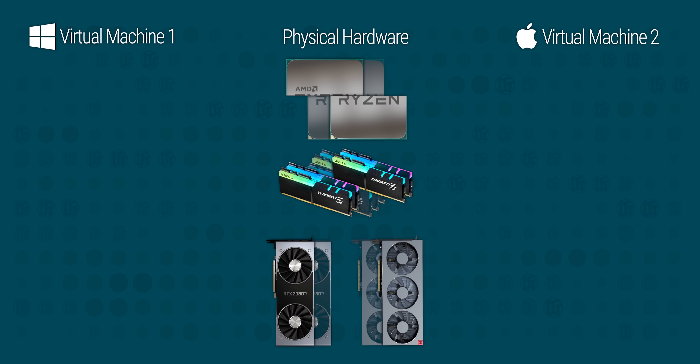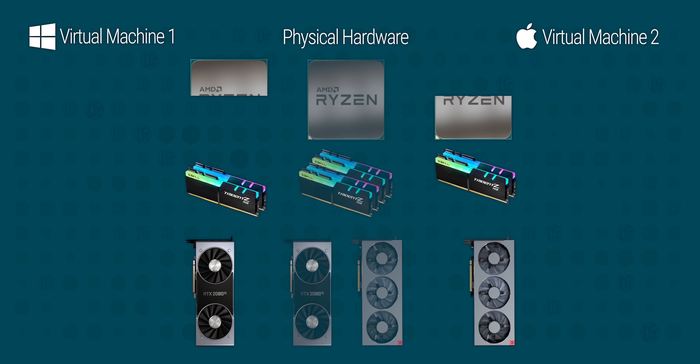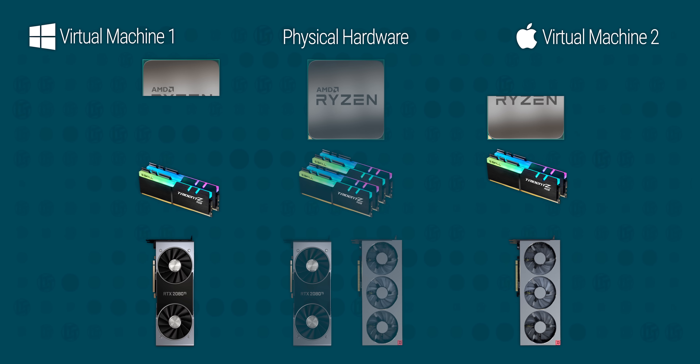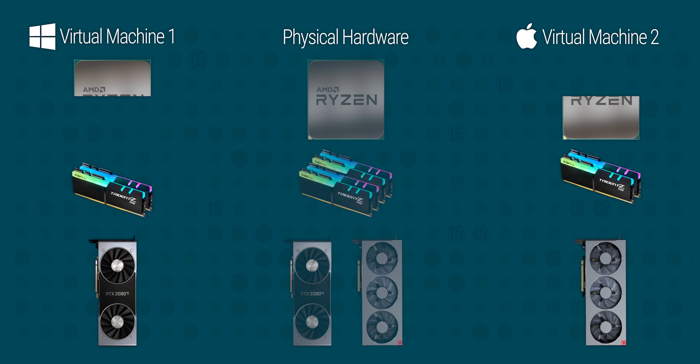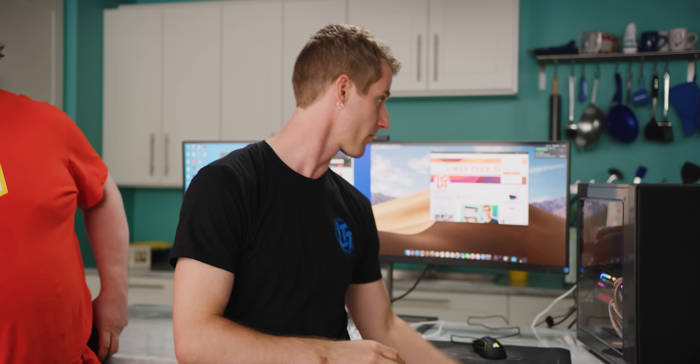Using this technology, you can even install two operating systems on the same computer that can exist completely independently of each other, as we've done in the past. So for today's project, we've got something really cool — we've taken an AMD Ryzen 9 3900X 12-core processor.